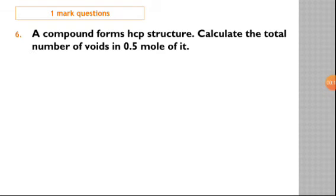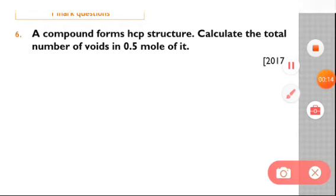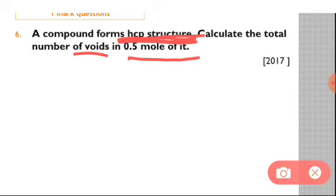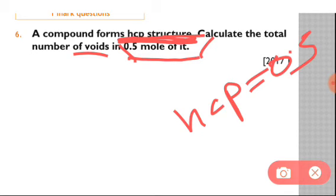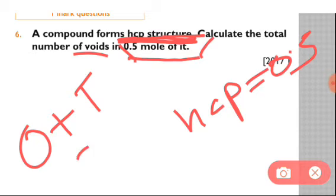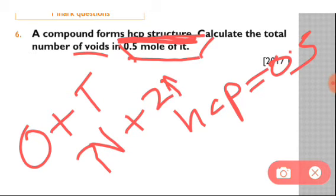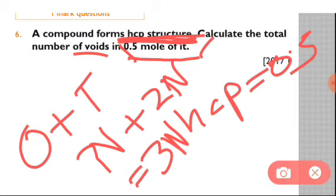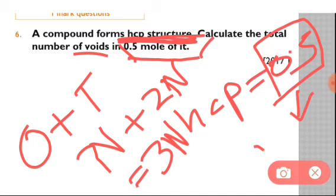Question number six: a compound forms HCP structure. Calculate the total number of voids in 0.5 mole of it. The main point is to calculate the total number of voids, meaning total octahedral plus tetrahedral voids. We know octahedral voids equal n and tetrahedral voids equal twice n, so total voids equals 3n. If we calculate with n equals 0.5 mole, then total voids equals 3 times 0.5 equals 1.5 mole.